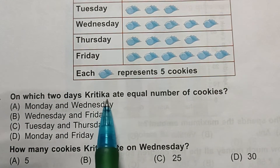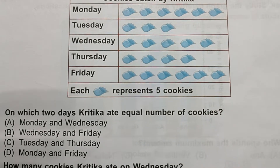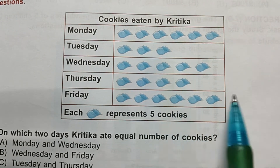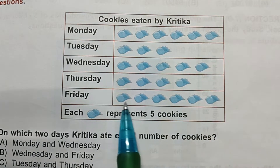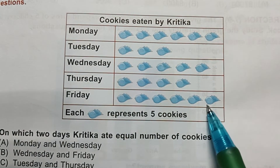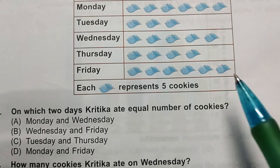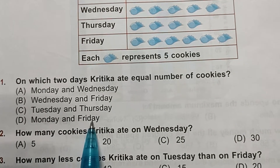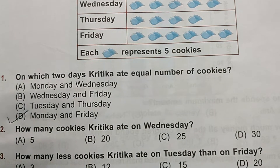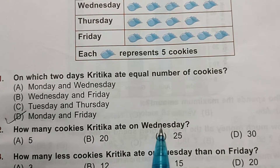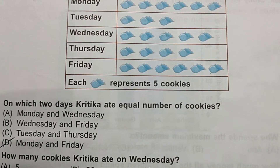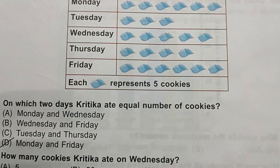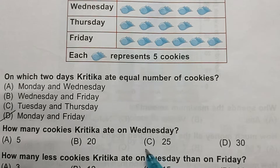Question 1: On which two days did Kritika eat an equal number of cookies? Looking at the pictograph, Monday has 6 pictures and Friday also has 6 pictures, so on Monday and Friday she eats equal cookies. Option D — Monday and Friday — is the answer. Question 2: How many cookies did Kritika eat on Wednesday? There are 5 pictures, and 5 into 5 equals 25. Option C is the answer.